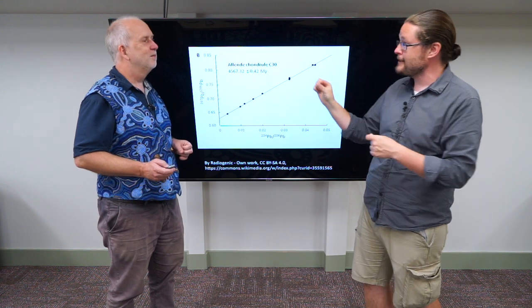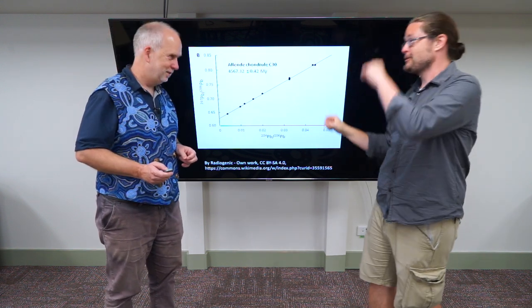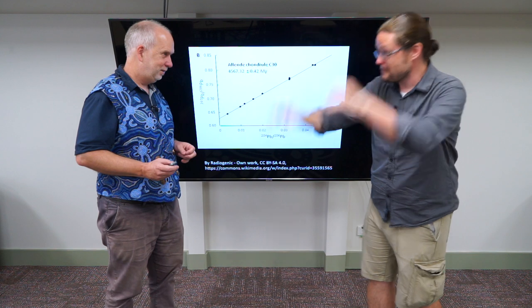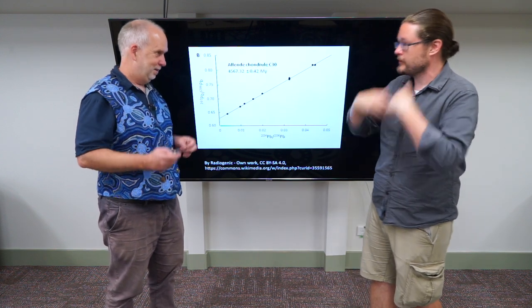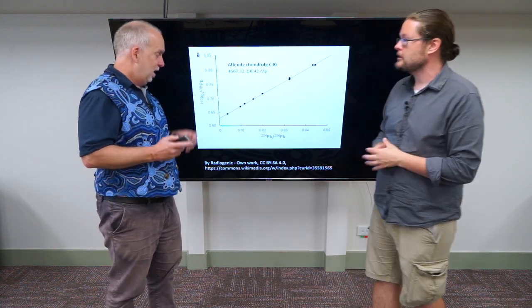And I guess the amazing thing is, this is just one chondrule, right? So they can measure it in another chondrule, in another chondrule, in another chondrule, and then get another meteorite and repeat the process. You can do this millions and millions of times almost. Yes.